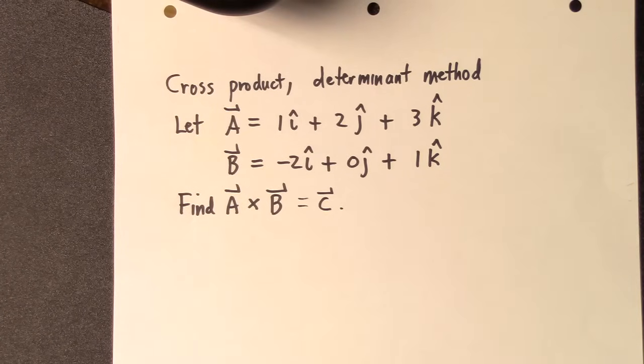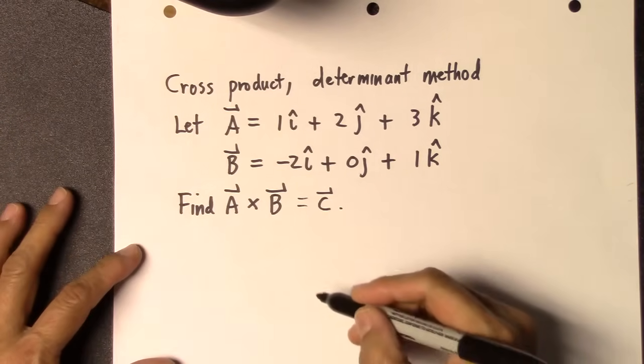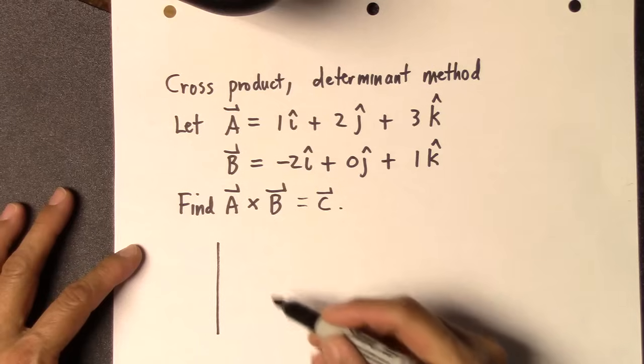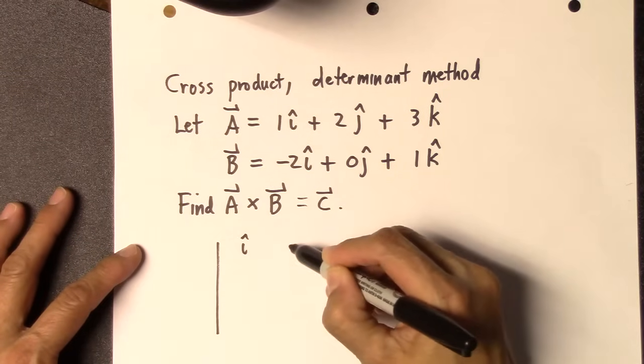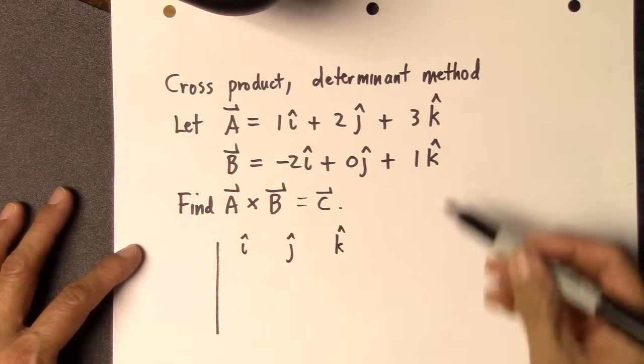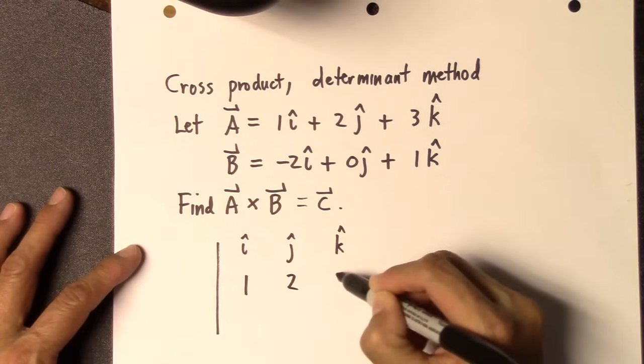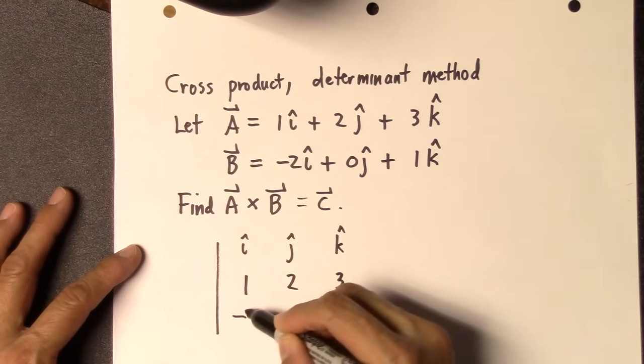So what you have to do is first construct a matrix, and the matrix looks like this. So you make a bar, and you're going to arrange i hat, j hat, and k hat in the top row, and then the components of A in the second row, and the components of B in the third row.